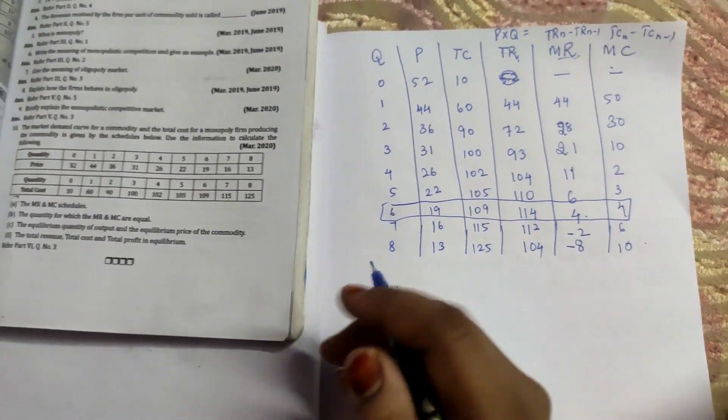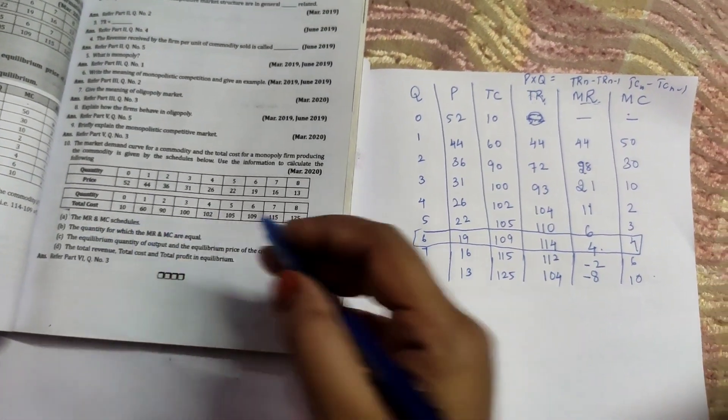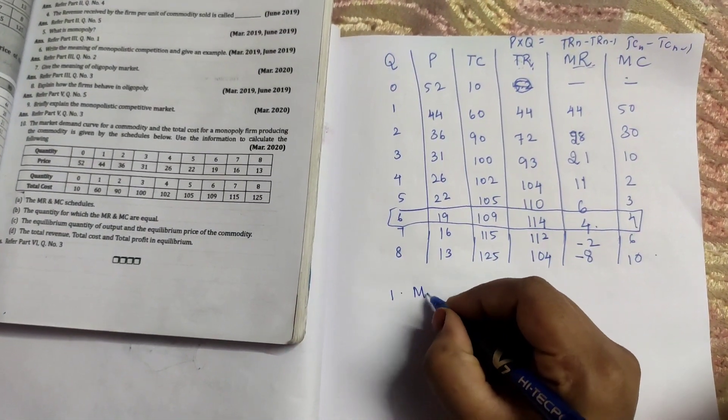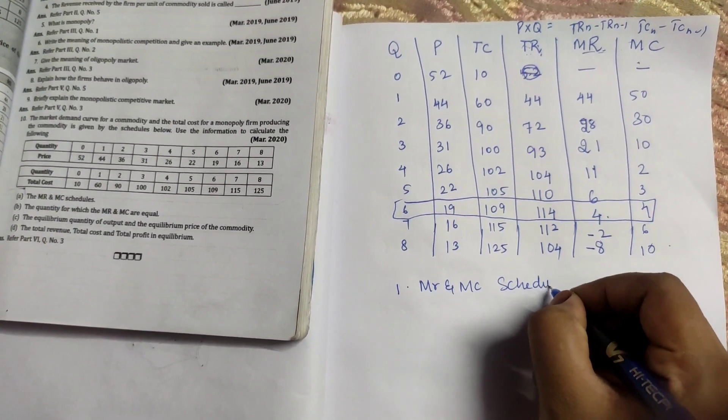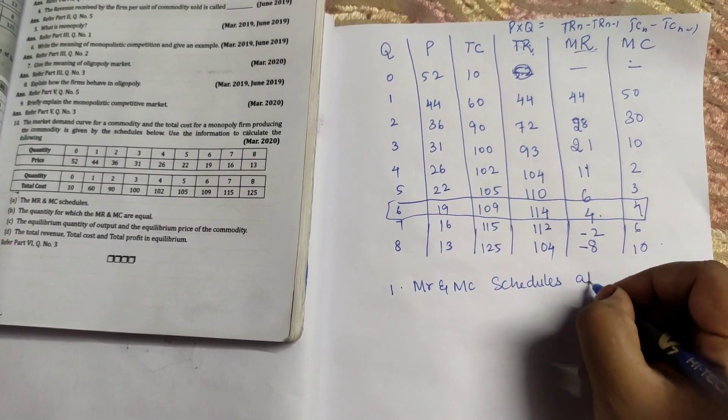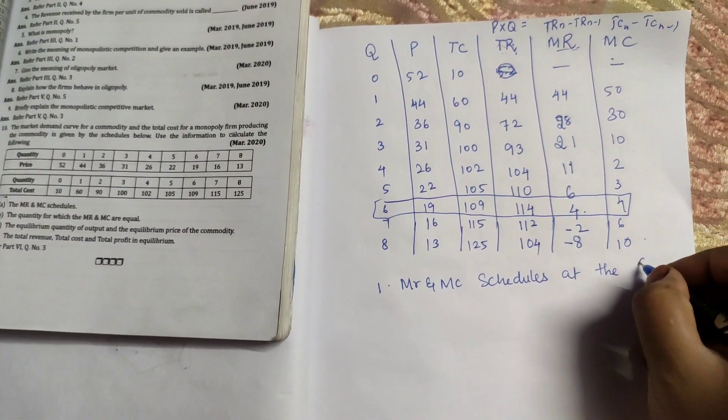So the first answer what you need to write, the MR and MC schedules at the quantity 6.